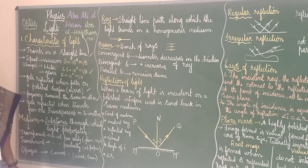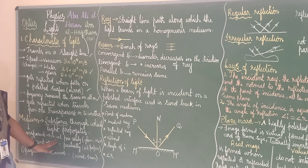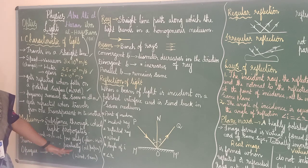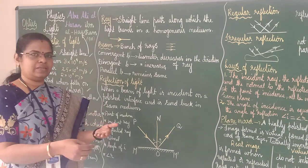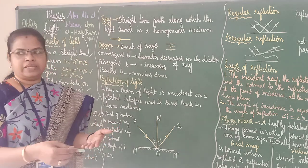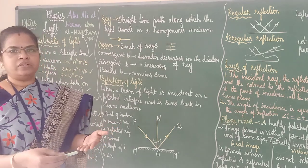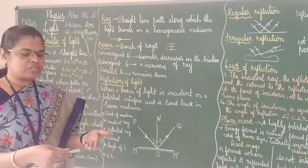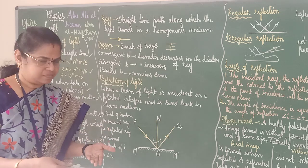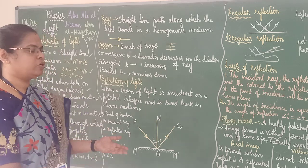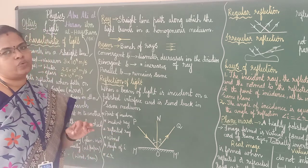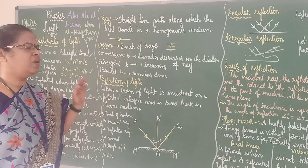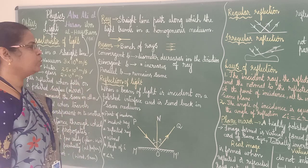Opaque — you will not be able to see anything. The medium in which light cannot propagate is called opaque. For example, a chalk piece or a sheet of paper — you will not be able to see through it. These are all easy terms that you have already studied.